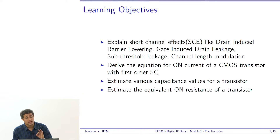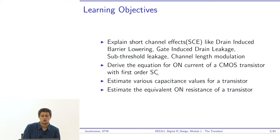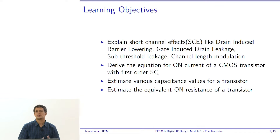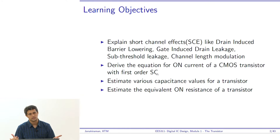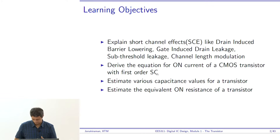You should be able to derive the equation for the on current of a CMOS transistor with first order short channel effects. The most important thing is you should be able to estimate various capacitance and resistance components of a transistor, because ultimately delay of a transistor is given by R times C. I need to be able to estimate these components and figure out how the transistor behaves with respect to resistance and capacitance.